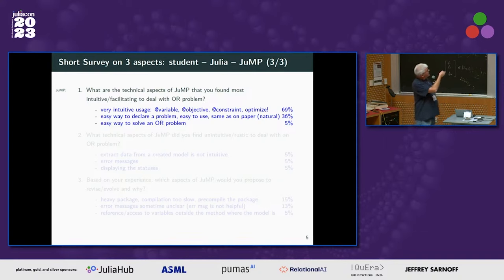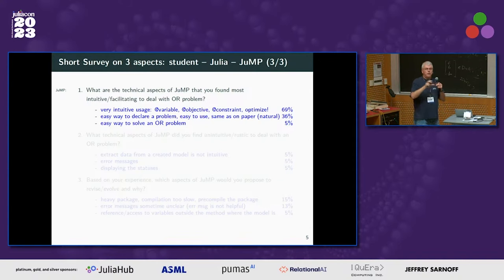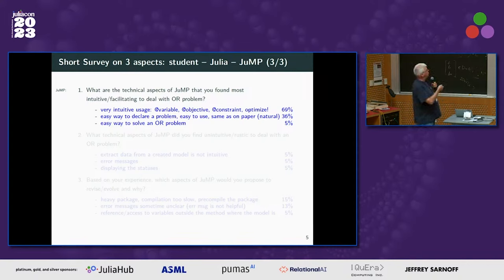About JuMP, the very good news is that students say JuMP is very intuitive to use — easy to write variables, constraints, and to solve models. It feels very natural to translate a mathematical model into a JuMP model.